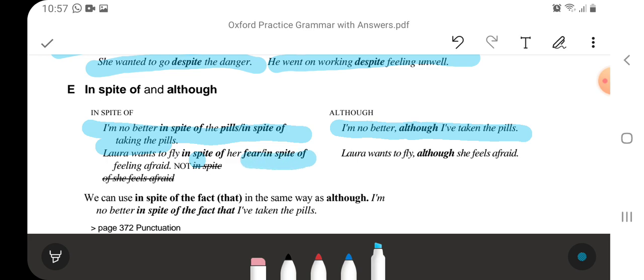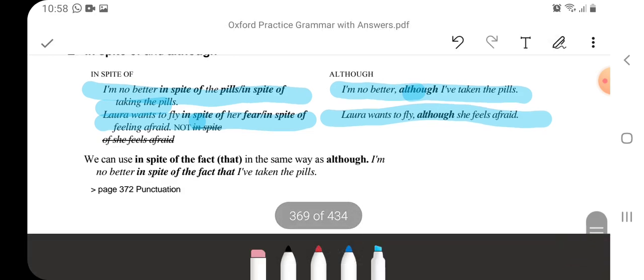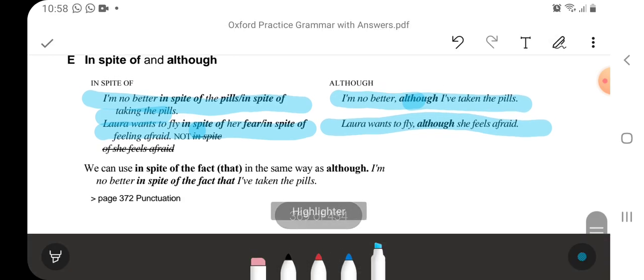Laura wants to fly in spite of her fear. Another way, Laura wants to fly in spite of feeling afraid. Laura wants to fly although she feels afraid. So this is how we are going to use in spite of and although. We can use in spite of the fact in the same way as although. I am no better in spite of the fact that I have taken the pills. So you can even add that with this phrase.